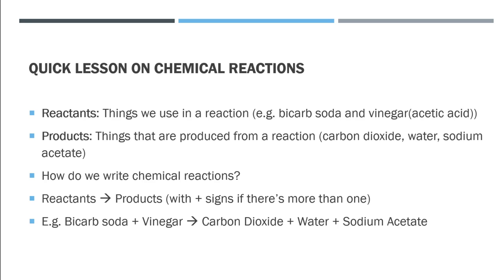How do we write chemical reactions? We write the reactants first, with plus signs if there's more than one — and don't worry, there doesn't have to be more than one reactant. We put a plus sign if there's more than one. So we have reactants and products. For example, bicarb soda and vinegar are the reactants. We have a little arrow, and then carbon dioxide, water, and sodium acetate are the products. So: reactants on the left, products on the right, with an arrow separating them.